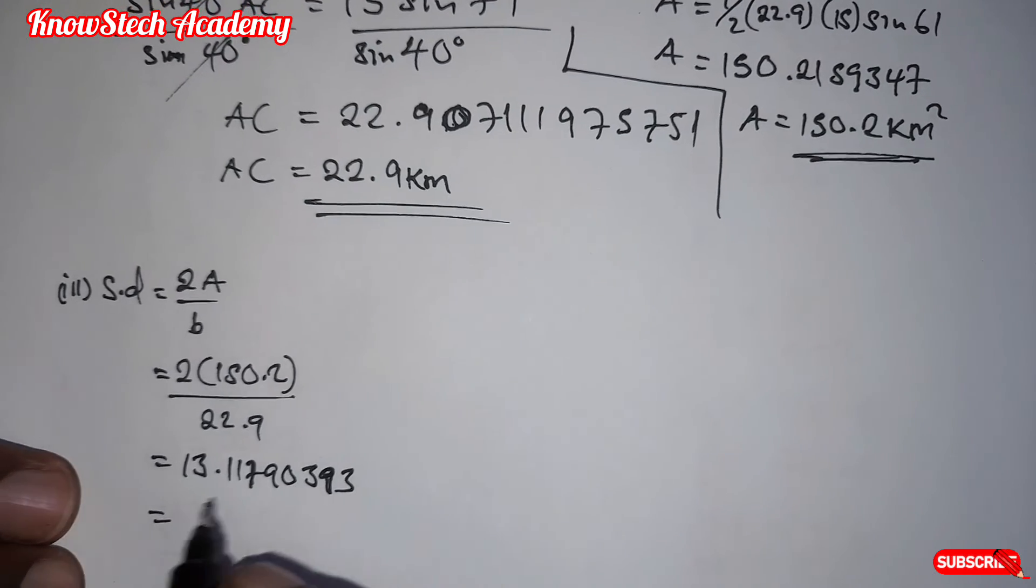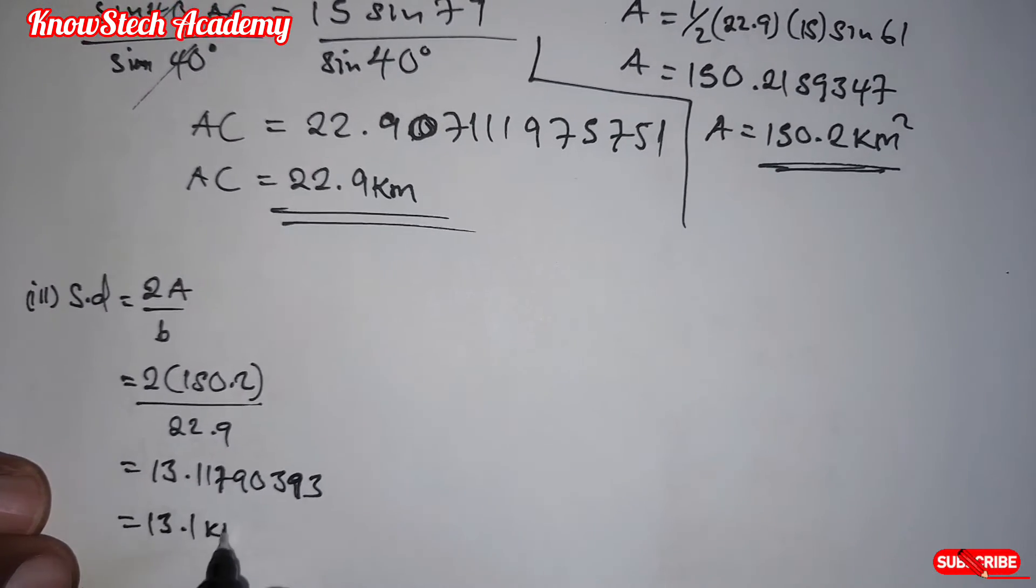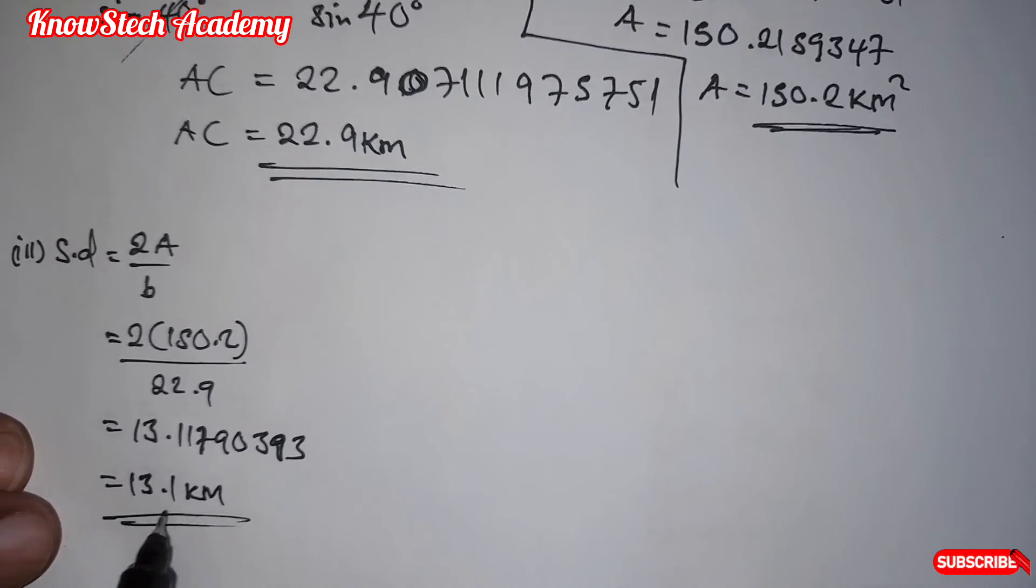When you round this one off to three significant figures, it will be 13.1 kilometers. So this is the shortest distance.